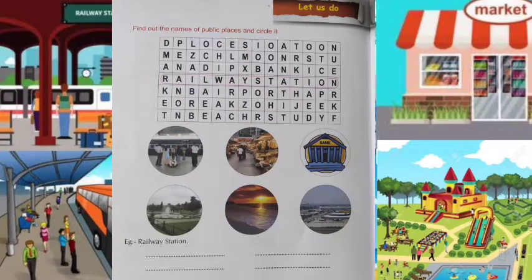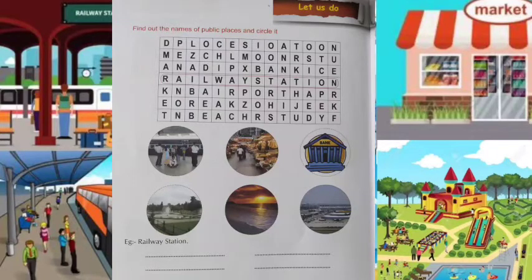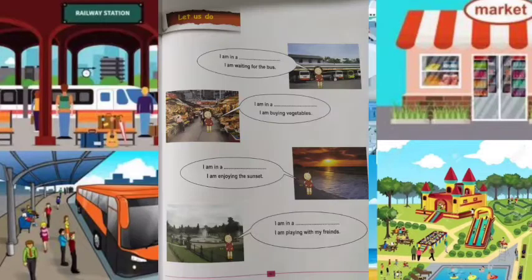Let's move to do the activities in your workbook. Find out the names of public places and circle them. One is done for you — railway station. We have to find the other public places. Next, fill in the blanks with the suitable answers. All of you do the two activities.